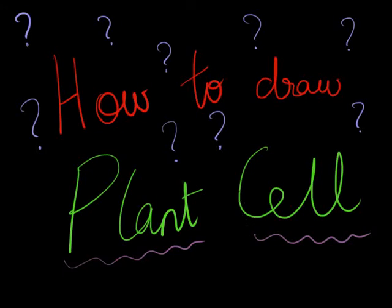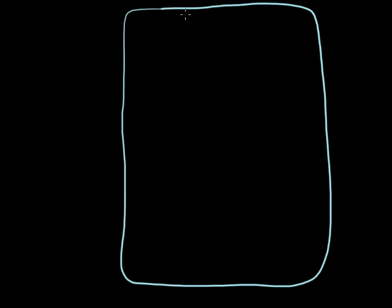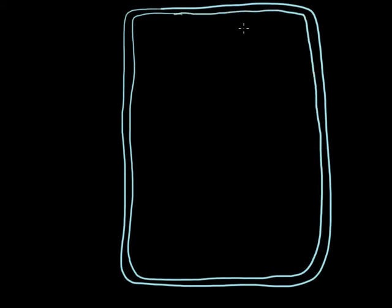Let us learn how to draw a plant cell. The first step involves drawing a large rectangle with rounded corners. Don't worry if the lines are not straight. Next, draw another rectangle within this, following the outer rectangle. Make sure to maintain gaps between both rectangles at all times. The outer rectangle is the cell wall and the inner rectangle is the cell membrane.